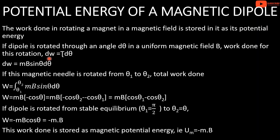The work done equation is dW equals τ·dθ. We replace the torque with MB sinθ, giving dW equals MB sinθ·dθ. If this magnetic needle is rotated from θ₁ to θ₂, we integrate MB sinθ·dθ from θ₁ to θ₂, which gives W equals MB(cosθ₁ minus cosθ₂).